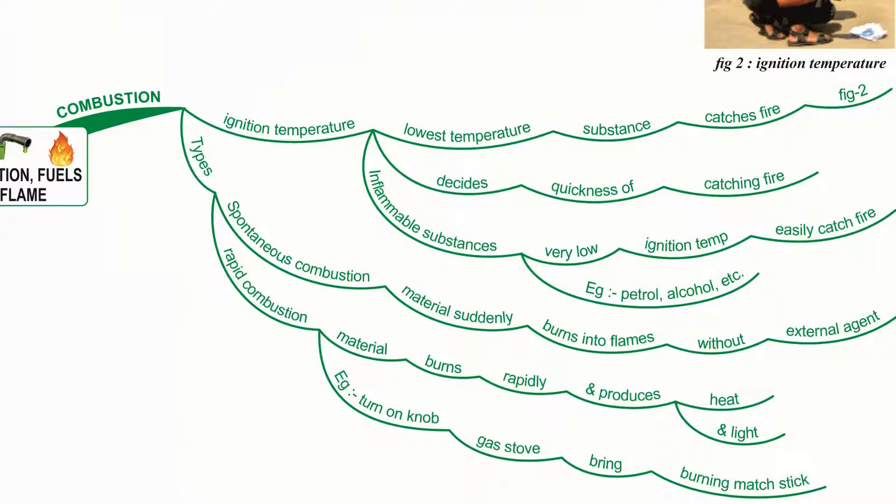Types of combustion. There are two types of combustions: spontaneous combustion and rapid combustion. Spontaneous combustion are those in which material suddenly burns into flames without the application of any external agent. Whereas gas burns rapidly and produces heat and light in rapid combustion.